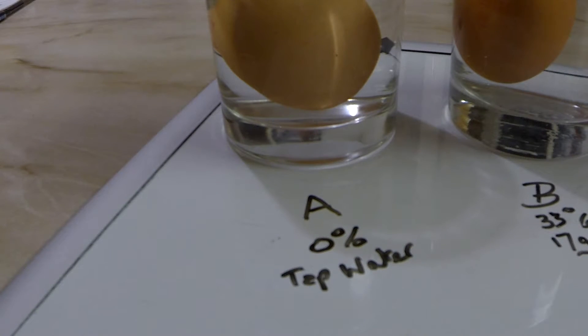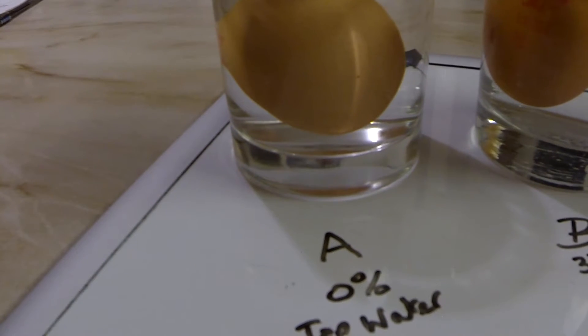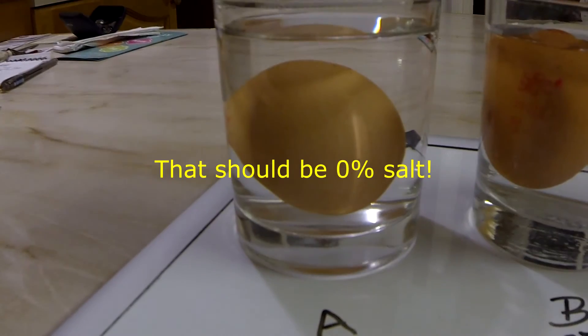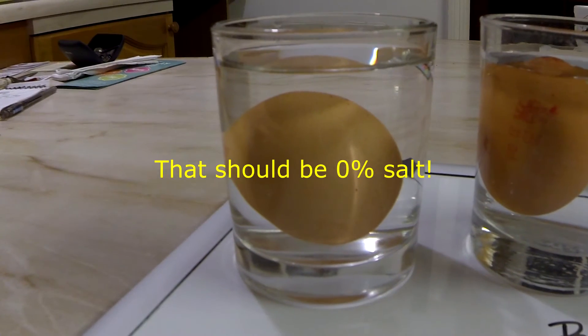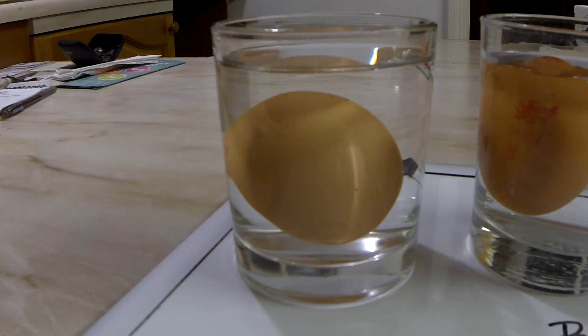Okay, so let's see if we can see, just from observation, how much of these eggs are floating above the surface. So this is egg A with 0% salt. And in fact, it's not floating at all. You can see that it's actually sort of sitting gently on the bottom there.